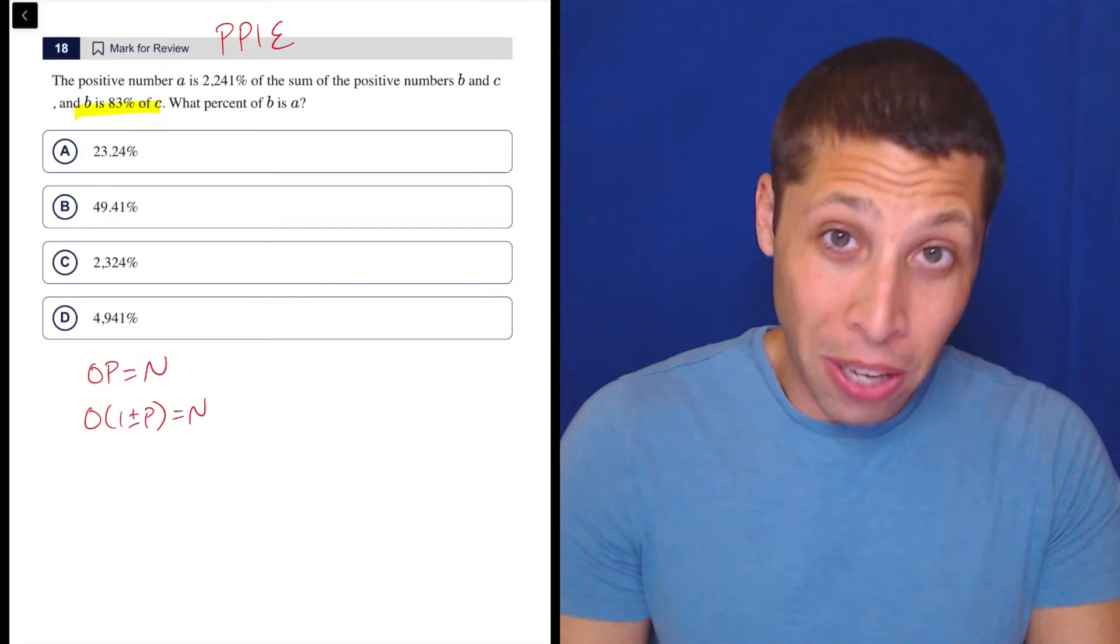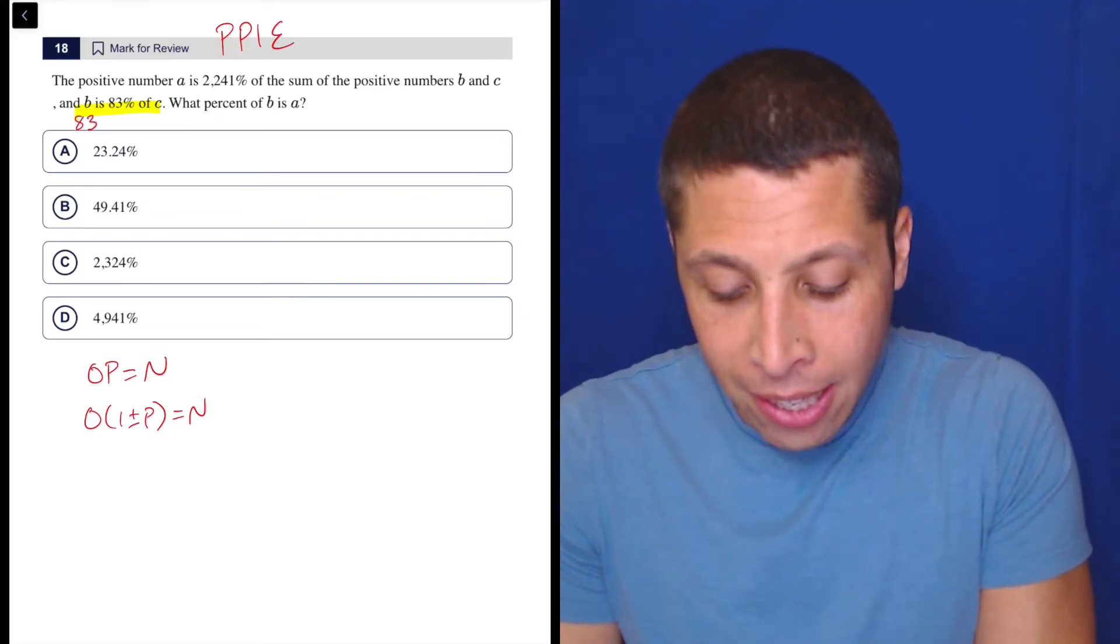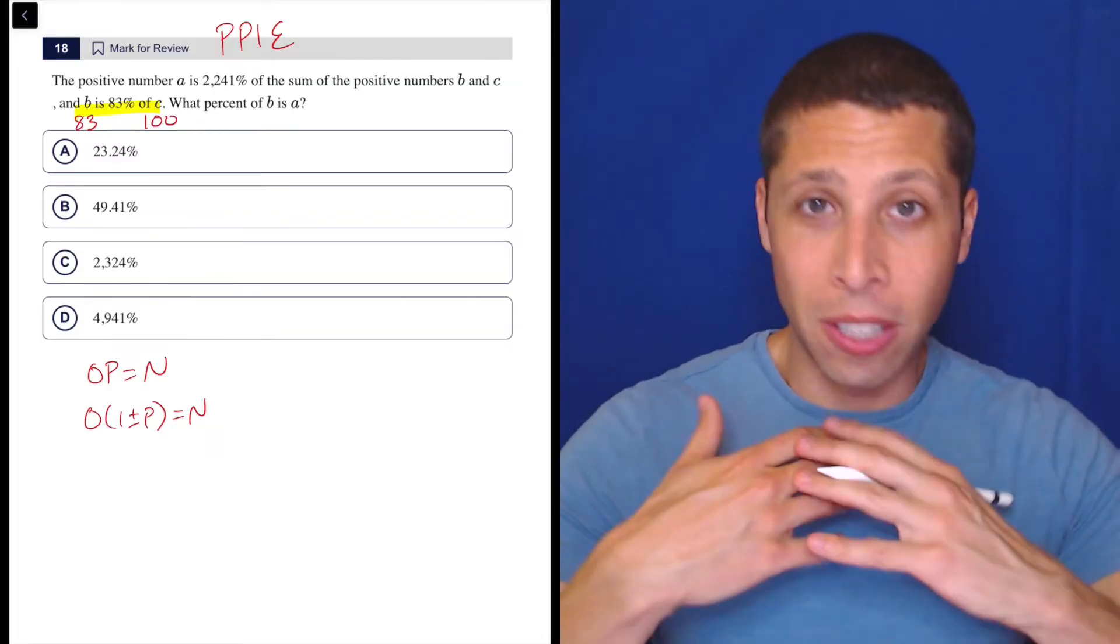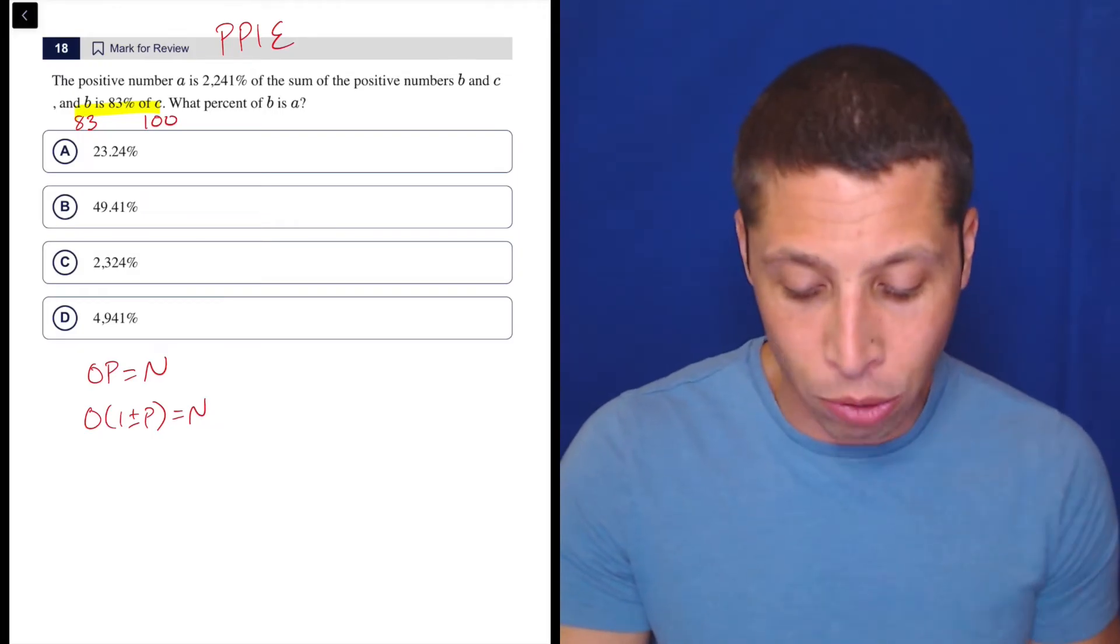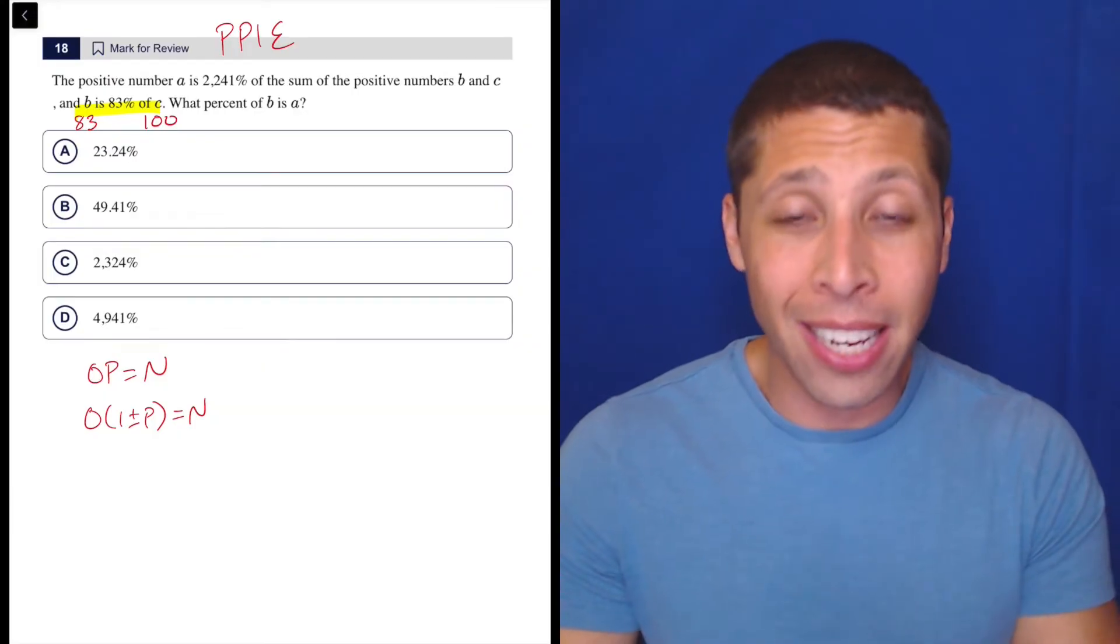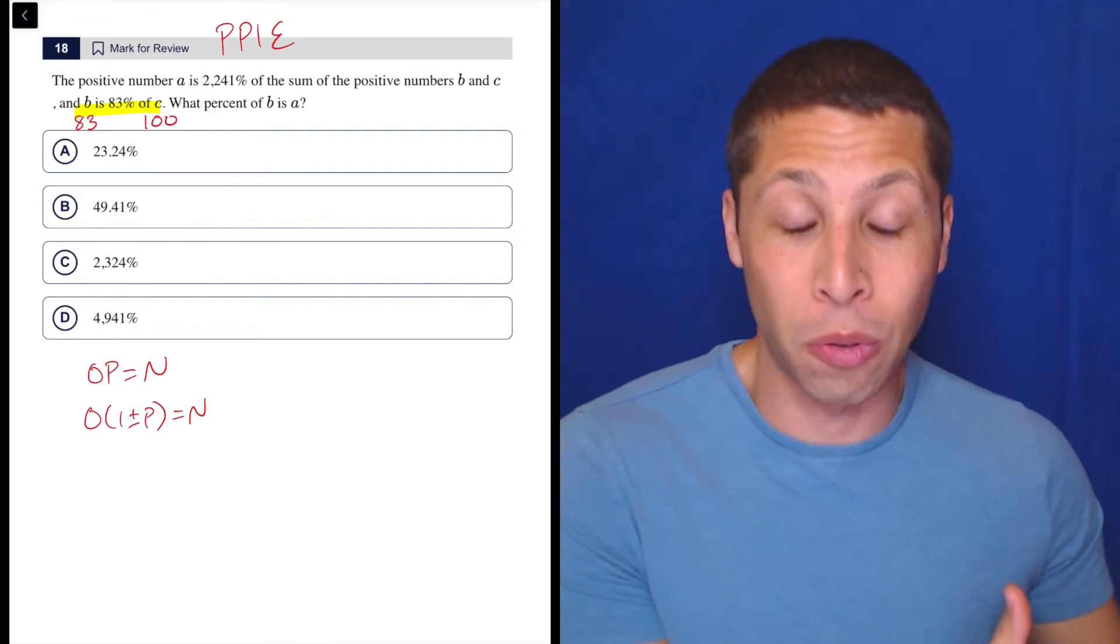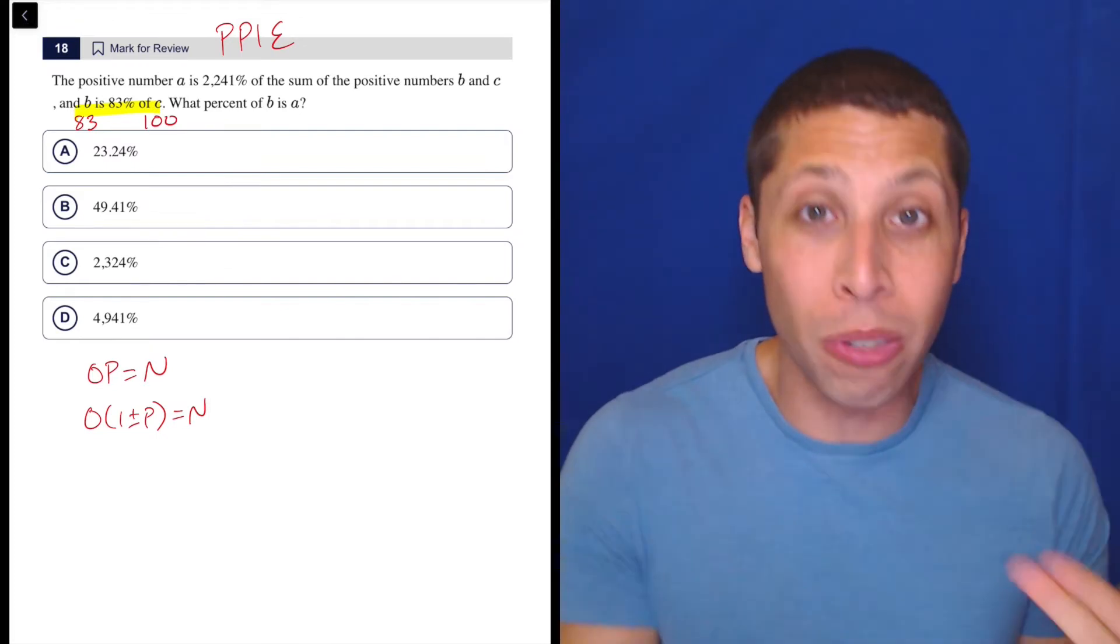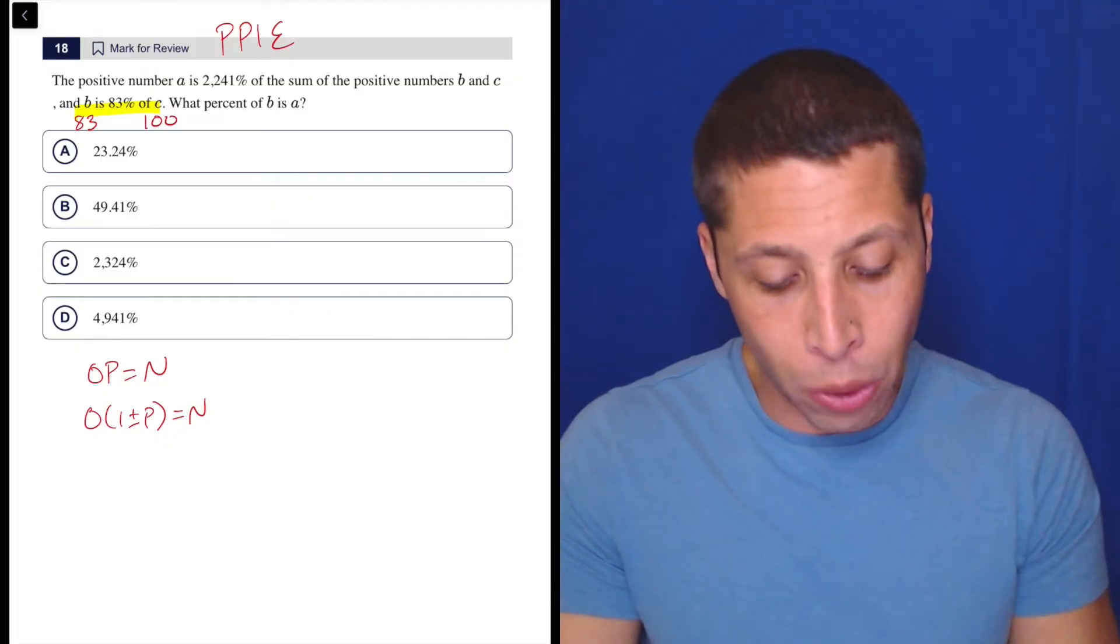Well, with percentages, 100 really works out nicely. So how about 83 is 83% of 100? And just like that, this question is much, much simpler. Now we're just going to be calculating A based on actual values. So I'm making this up. I could make up any numbers for B and C as long as the value I choose for B is 83% of the value I choose for C. But why make your life harder? 100 is a really nice number because we can do some of the percentages in our head.